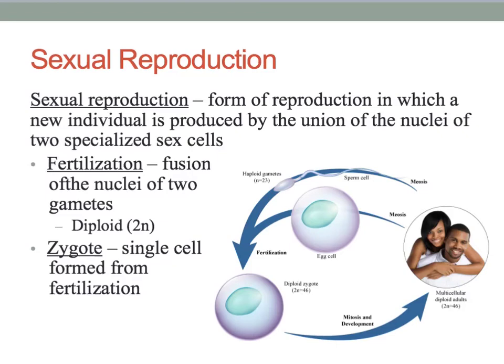This process restores the diploid number of chromosomes by forming a zygote. A zygote is a single cell formed from fertilization.